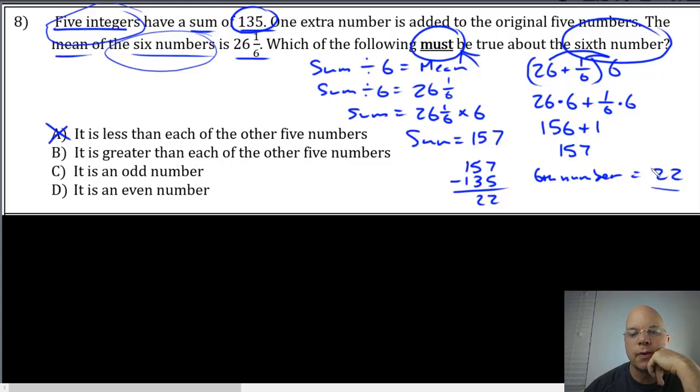Answer B says the sixth number is greater than each of the other five numbers. Not only must that not be true, I don't think it's possible. If 22 is greater than all five numbers, they have to be at most 21, and five 21s would give you 105, not 135, so this couldn't possibly be true.